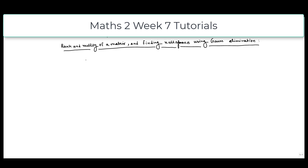Let us consider a matrix A as follows: 2, 4, 0, 2 / 1, 0, 3, 1 / 3, 2, 1, 0. You can see that this is a 3×4 matrix, so there are 3 rows and 4 columns.